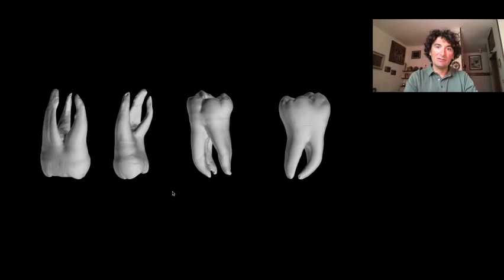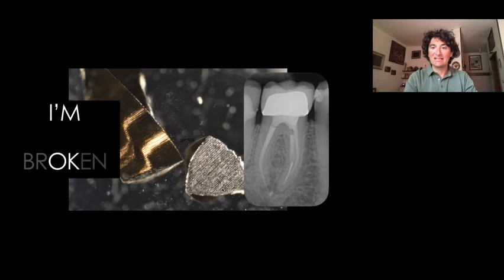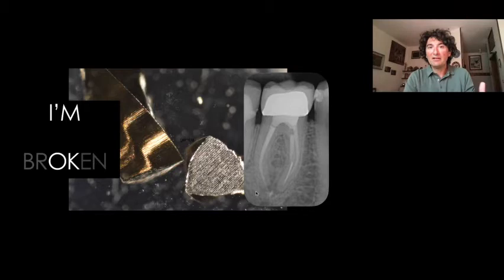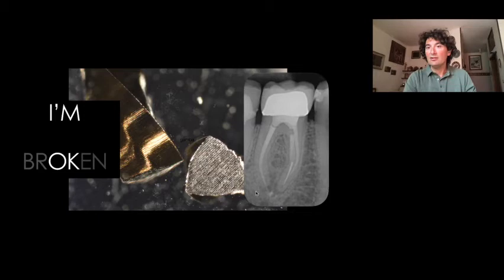In a root canal system we have a lot of coronal interferences. If we don't remove those coronal interferences before shaping, the only risk is to over-shape apically because of the instability created by the interferences we didn't remove. The strategy of the operator is the key to success. If we want to be successful, we have to train ourselves and understand how to avoid broken files. It can happen to everyone. The best endodontist is the one who fails less.